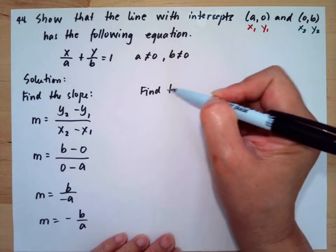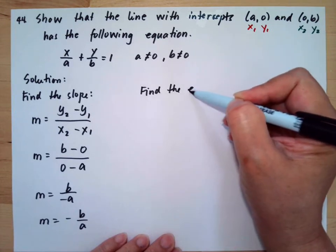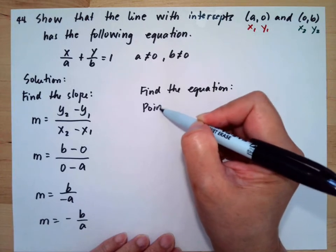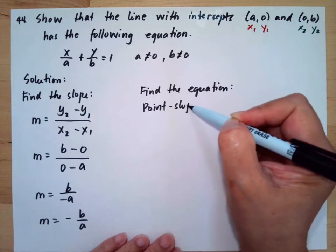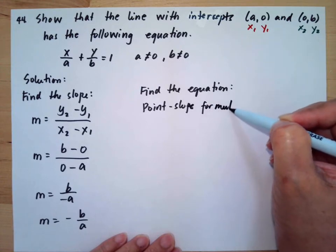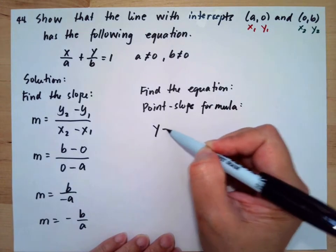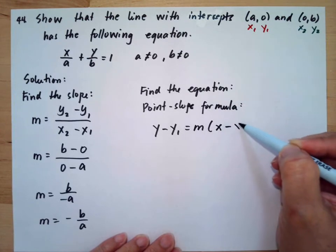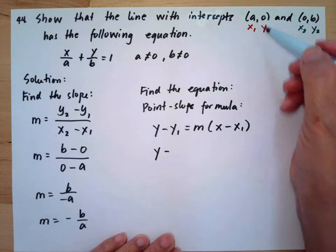Now after that, we will find the equation using the point-slope formula. So we have y - y₁ = m(x - x₁).